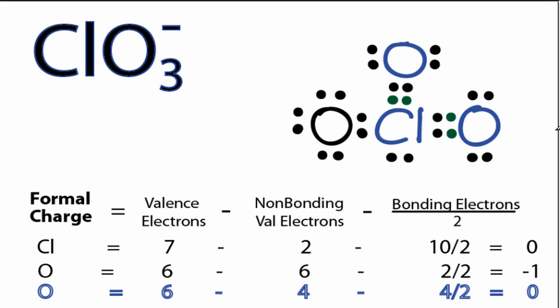By making those double bonds between this oxygen and chlorine, and then this one here, we now have a formal charge of 0 on the chlorine and on these two oxygens, while this oxygen, the black one, has a -1 charge. That makes sense because the total charge is now -1, matching the ion charge.